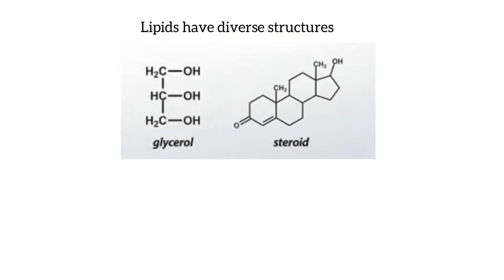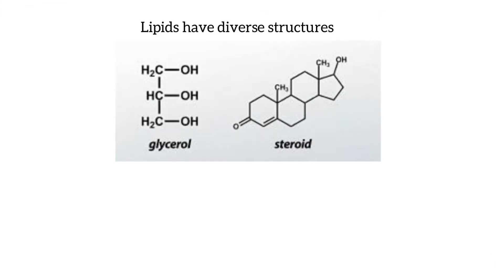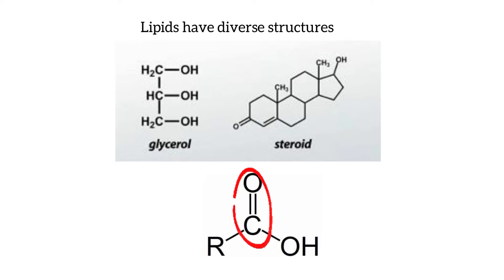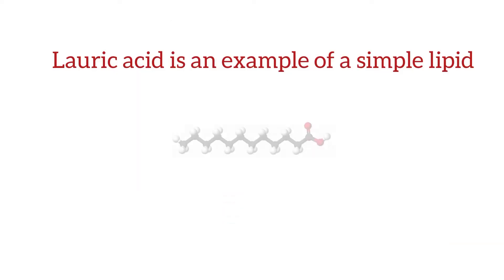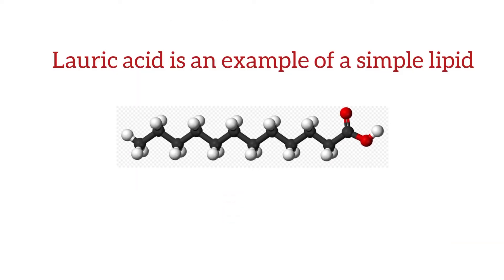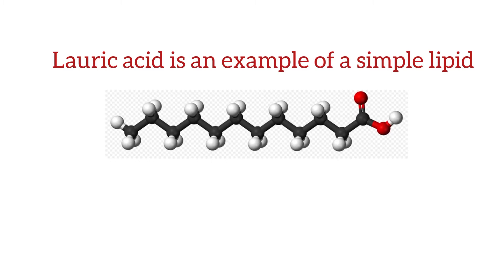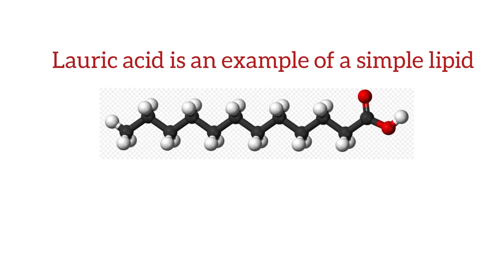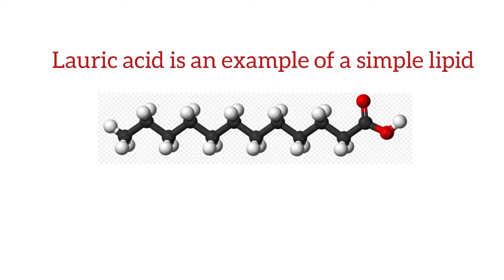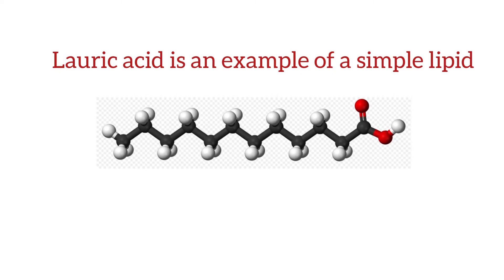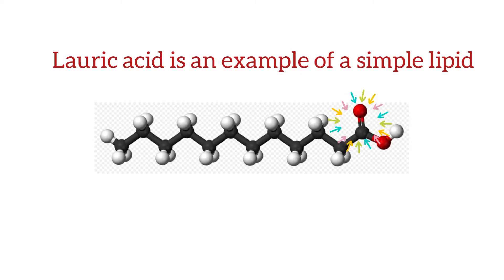Lipids have diverse structures, but the most common functional groups they contain are carbonyl and alcohol groups. Lauric acid is an example of a simple lipid, which contains 12 carbon atoms with 2 oxygen atoms and 24 hydrogen atoms. As it shows, they contain a carboxyl functional group bonded at the end of the main chain.